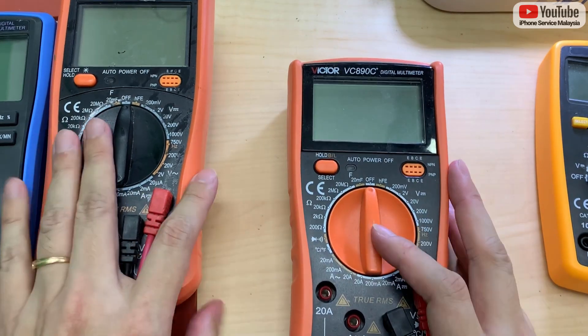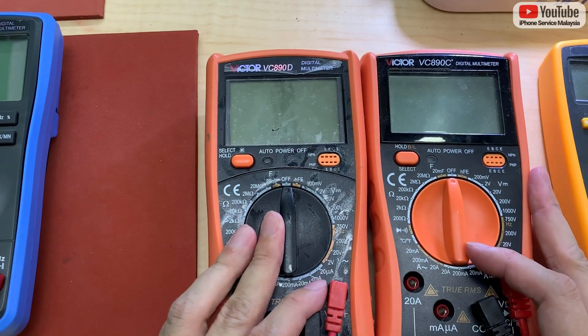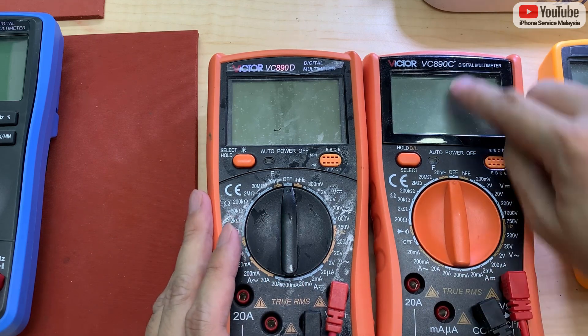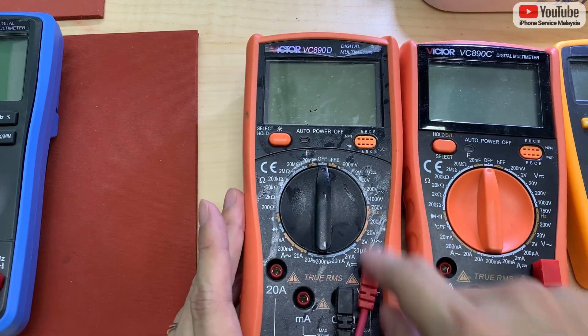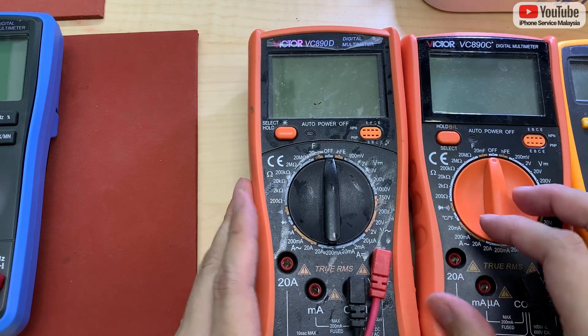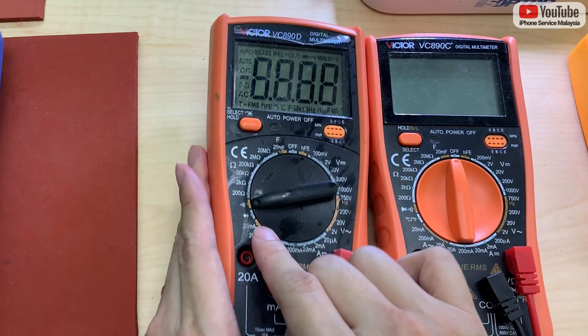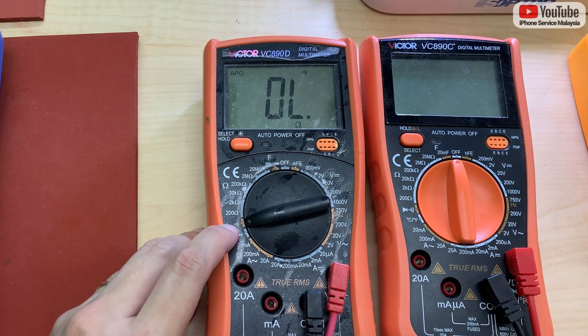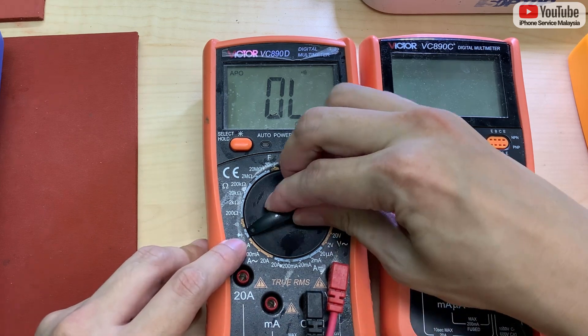The Victor. There's two Victor, seems like to be a same brand or things like this. This one comes with the temperature measurement and this one doesn't come with temperature measurement. As you can see, this one can manually turn on the buzzing mode and the dial mode.